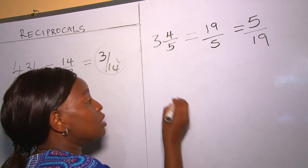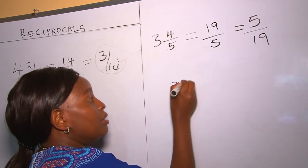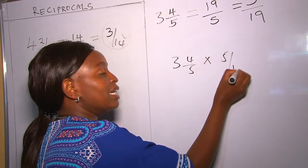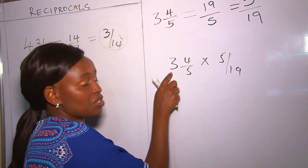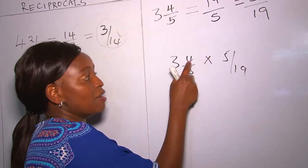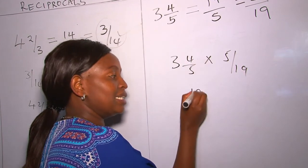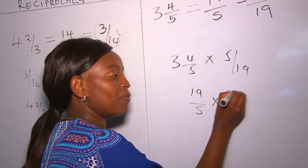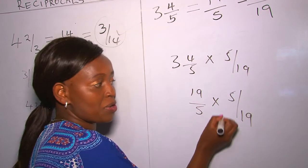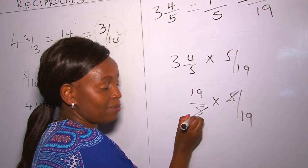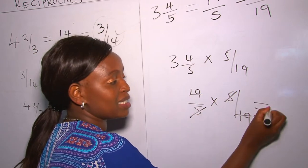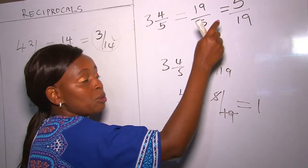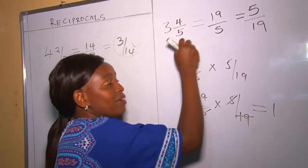We can prove it. Three and four over five multiplied by five over nineteen: five times three is fifteen, fifteen plus four is nineteen — so nineteen over five multiplied by five over nineteen. We cross multiply and our answer is one. Therefore five over nineteen is the reciprocal of three and four over five.